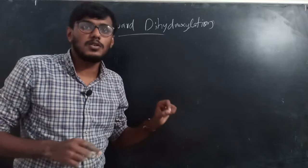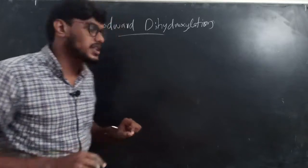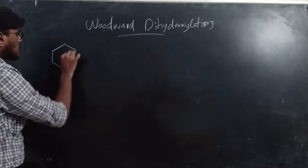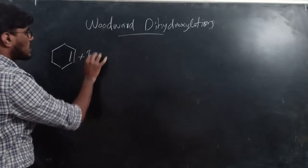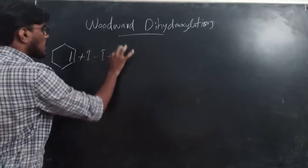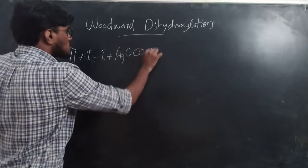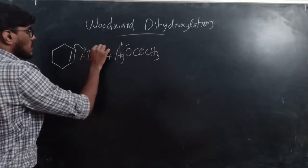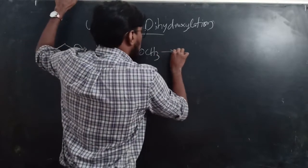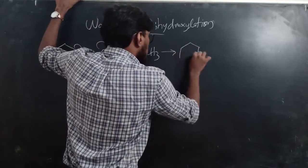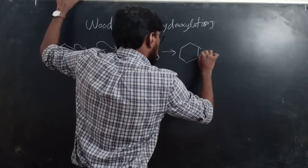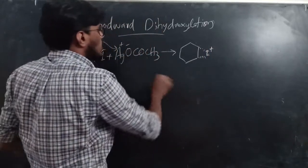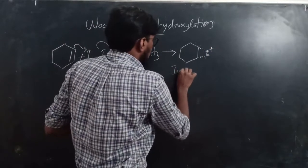We are going to check the mechanism of the Woodward dihydroxylation reaction. Like Prevost dihydroxylation, an alkene reacts with iodine (I2) and silver acetate (CH3COOAg). In the first step, the pi electrons attack iodine — iodine leaves with silver — and an iodonium ion (I⁺) is formed, just like in the Prevost mechanism.